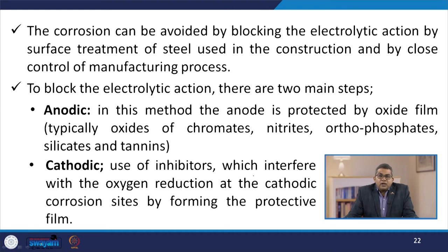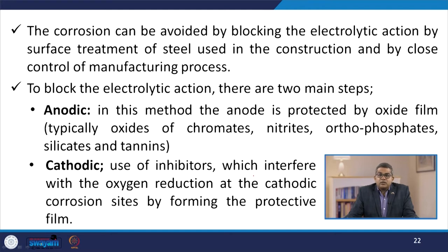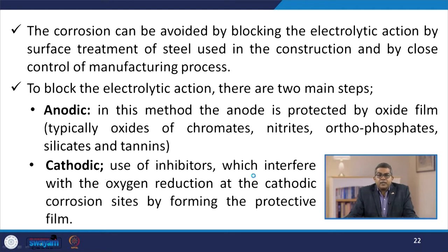To block the electrolytic action, there are two main steps. The first is anodic protection: the anode is protected by an oxide film, typically oxides of chromates, nitrates, orthophosphates, silicates, and tannins. The second is cathodic protection: use of inhibitors which interfere with the oxygen reduction at cathodic corrosion sites by formation of a protective film, so that corrosion cannot take place.